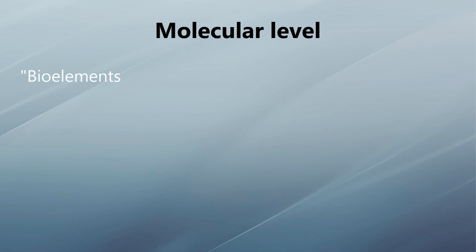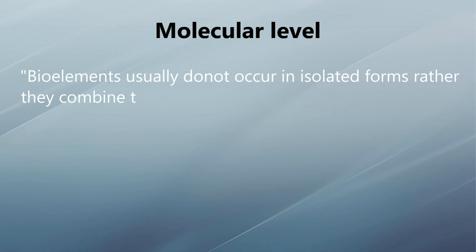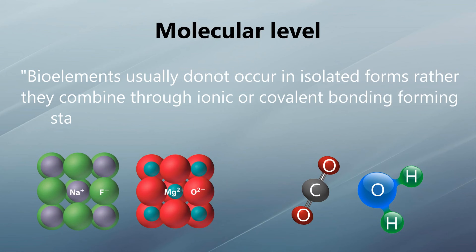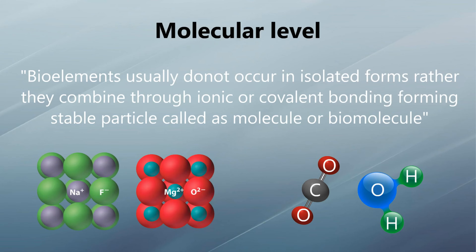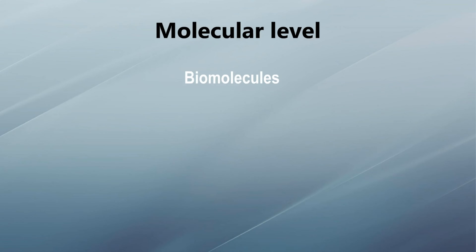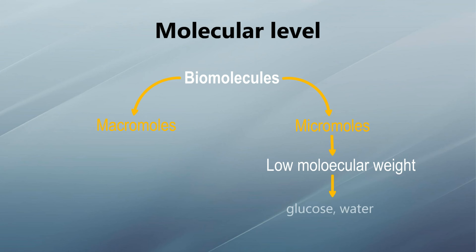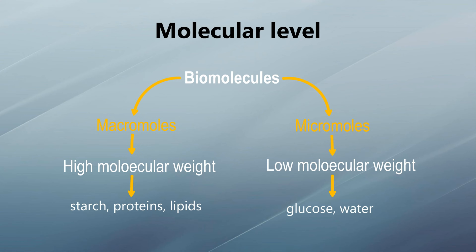At the molecular level, bio-elements usually do not occur in isolated forms; rather, they combine through ionic or covalent bonding, forming stable particles called molecules or biomolecules. Biomolecules are classified as micromolecules and macromolecules. Micromolecules have low molecular weight — examples are glucose and water — while macromolecules have high molecular weights, for example starch, proteins, and lipids.